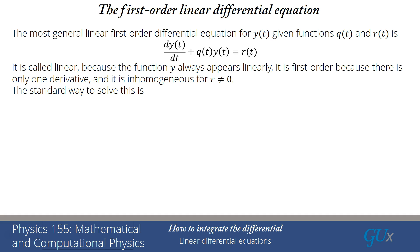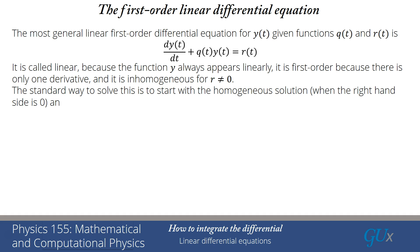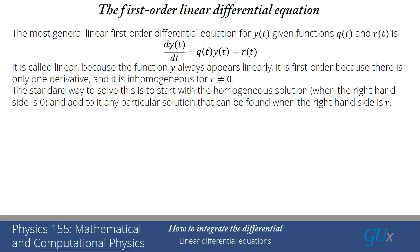The standard way to solve this is to start with the homogeneous equation, find all of its solutions — which occurs when r equals zero — and then add to that general homogeneous solution any particular solution we can find when the right-hand side is r(t). By doing that, we get the most general solution to this problem.